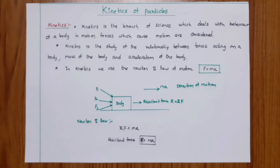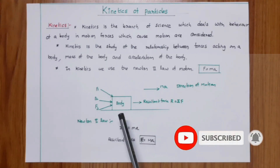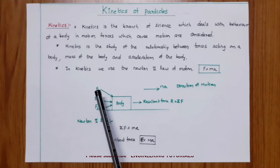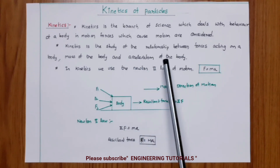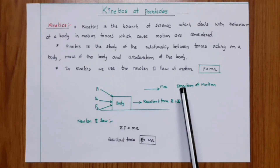Next topic: kinetics of particles. Kinetics is the branch of science which deals with the behavior of a body in motion, where the forces which cause the motion are considered. Consider a body of mass m with a system of forces F1, F2, F3 acting on it. The resultant force equals sigma F, and from Newton's second law, F equals ma. Kinetics is the study of the relationship between the forces acting on a body, the mass of the body, and the acceleration of the body.